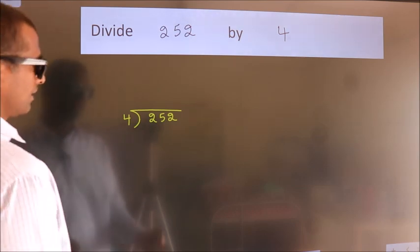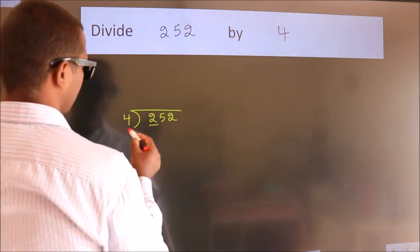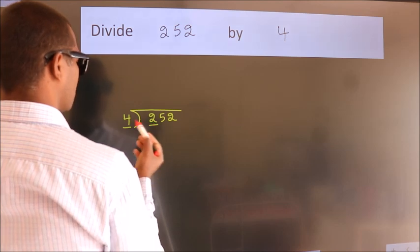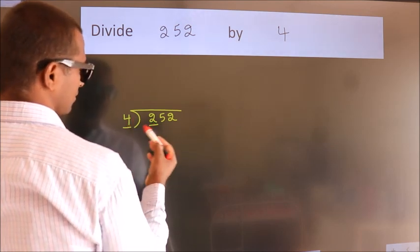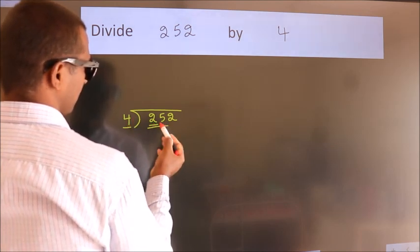Next. Here we have 2, here 4. 2 smaller than 4. So we should take 2 numbers, 25.